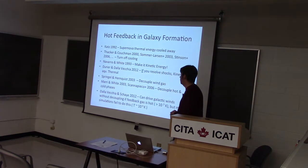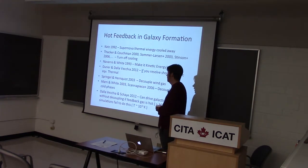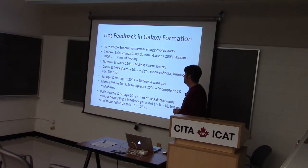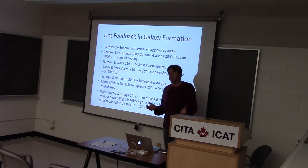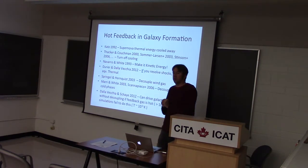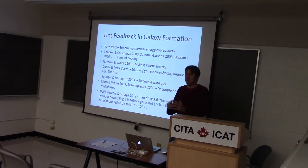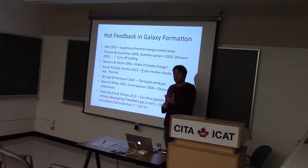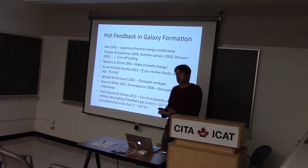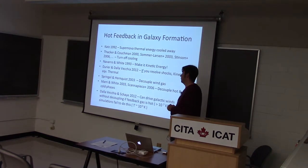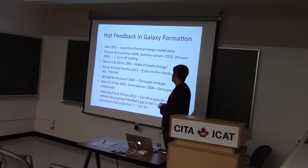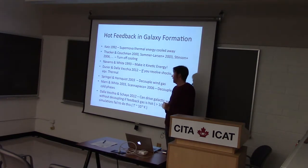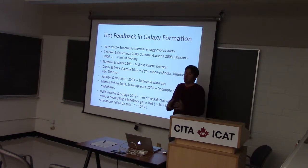In terms of the history of hot feedback, the person who really got it going was Neil Katz, and he put in supernova thermal energy with ridiculously low resolution, got it right in the middle of the strong cooling curve, and it all went away. People realized you couldn't just be naive about it. Thacker and Couchman, Summers, Larsen, and Stinson argued that turning off cooling temporarily was a crutch to deal with the fact that you were dumping supernovae into too much mass so the temperature was too low. Navarro and White argued to just make it kinetic energy, then cooling is not a problem. But Durier and Dalla Vecchia pointed out that if it's supersonic, it just shocks and thermalizes immediately — so it's not really a solution.